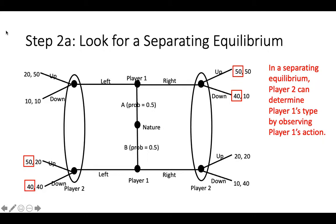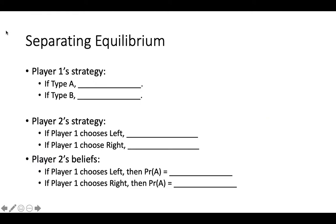Given that this is the case for player 1, if player 2 observes player 1 playing right, then player 2 should assume that player 1 is type A, and player 2 should play up. Similarly, if player 2 observes player 1 playing left, they should assume that player 1 is type B, and player 2 should play down. We have now found a separating equilibrium: if player 1 is type A, they should play right, and if player 1 is type B, they should play left.